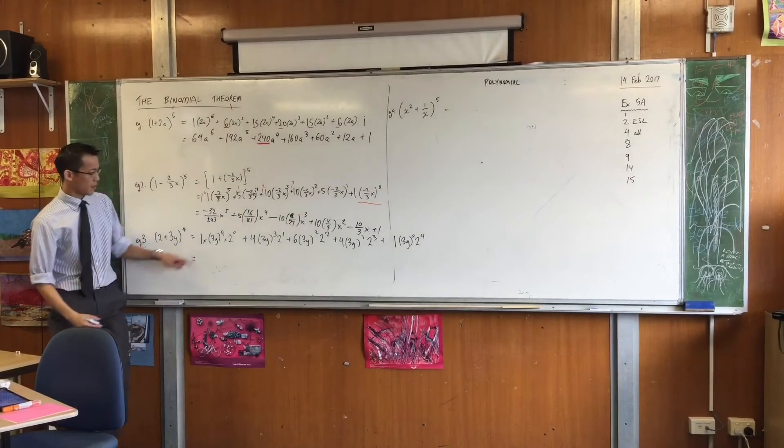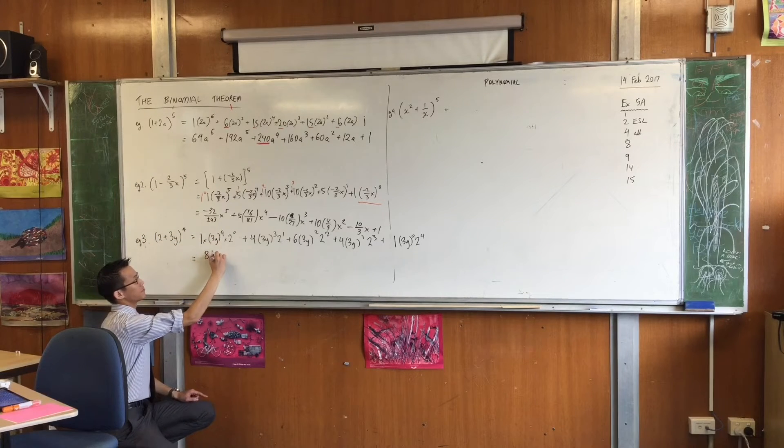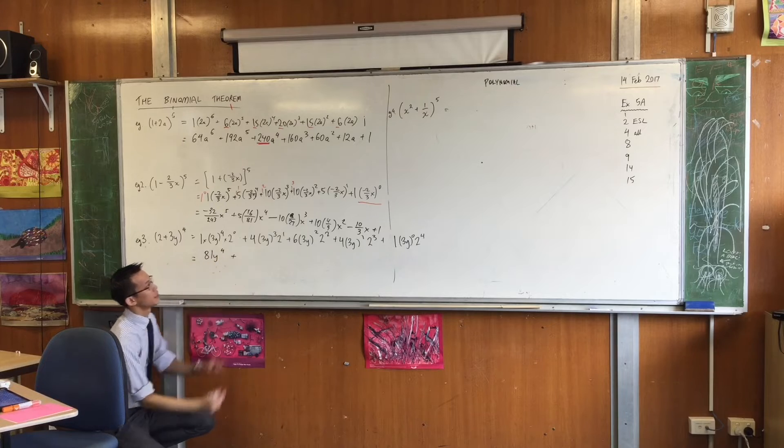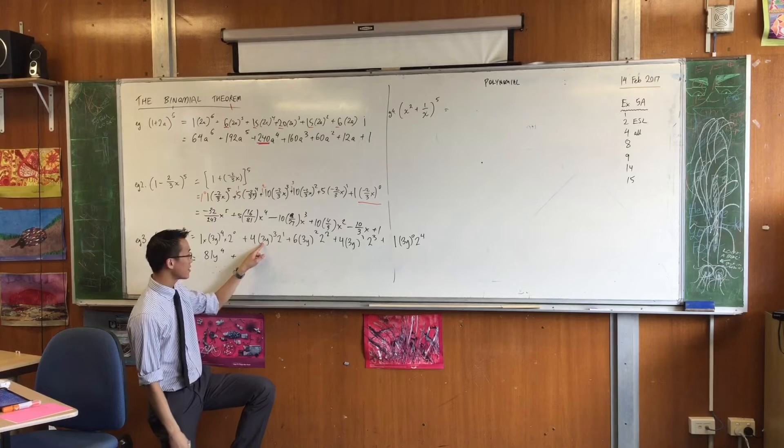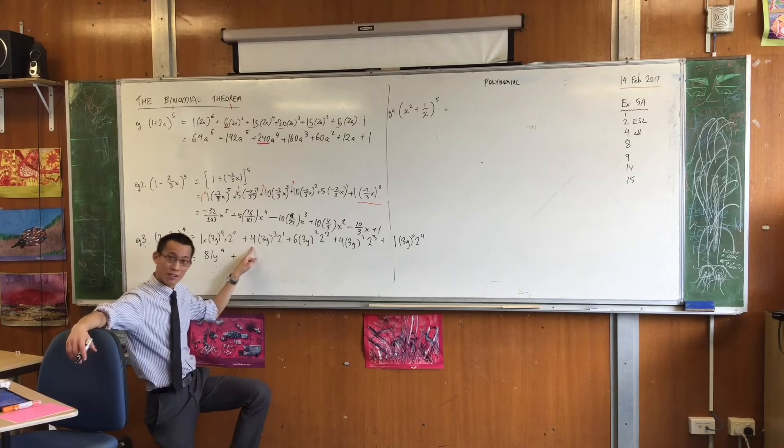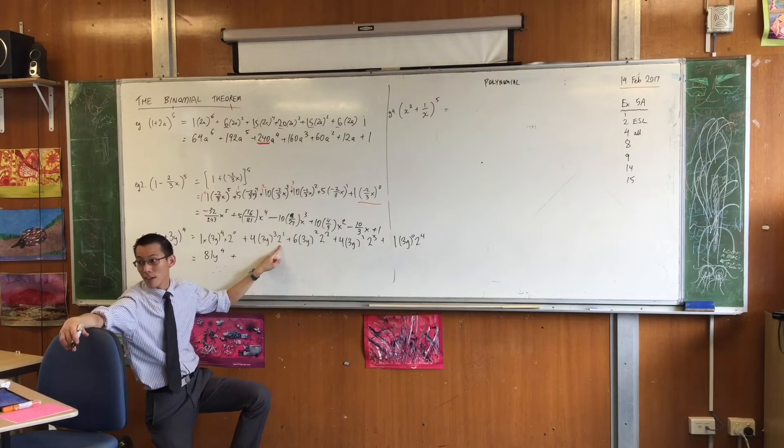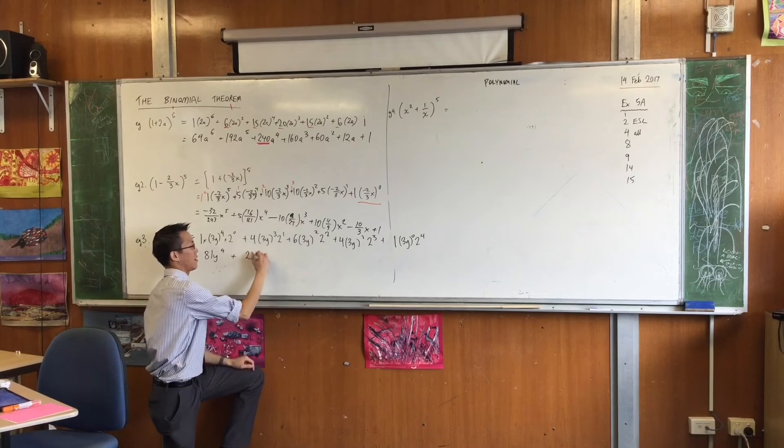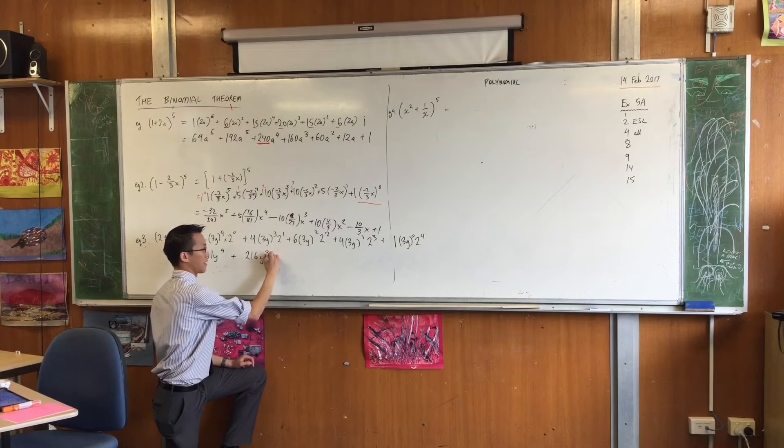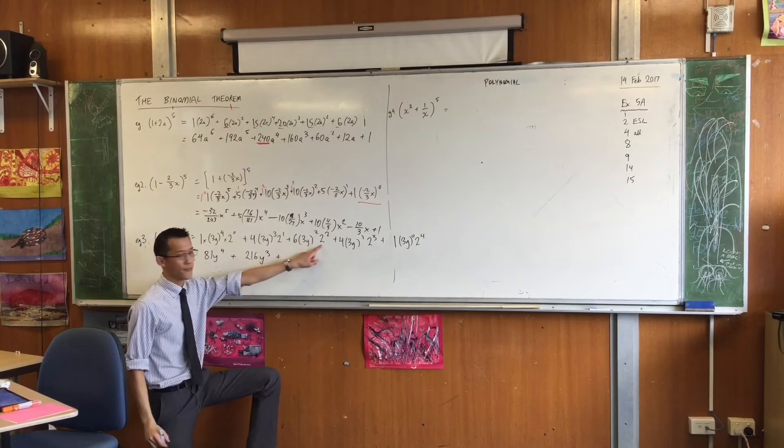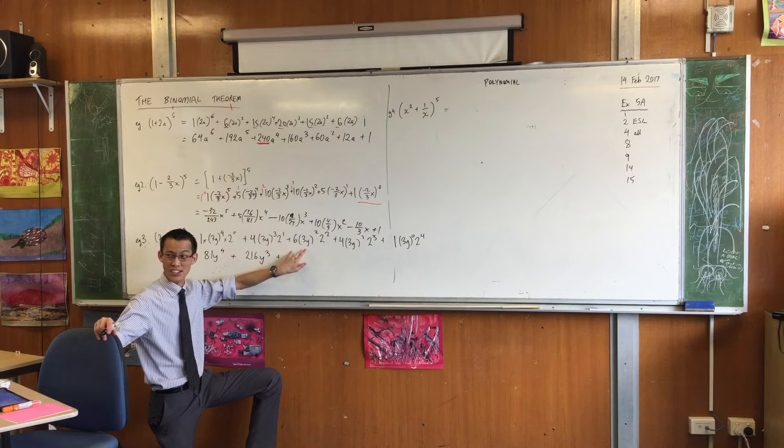3 to the 4 is 81. 3 cubed times 4 is... okay, got your calculator there. 3 cubed times 4 is 108, and then you multiply again which is 216. How many y's do I have? I've written it in descending order. 3 squared is 9, 2 squared is 4, that's 36. 6 lots of 36 I think is 216.